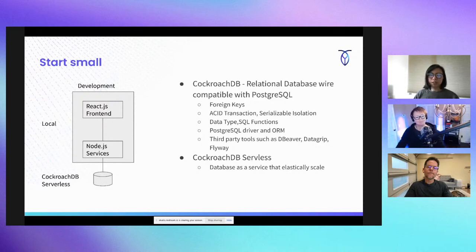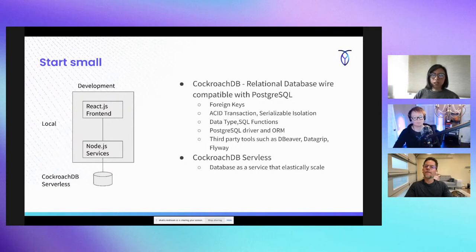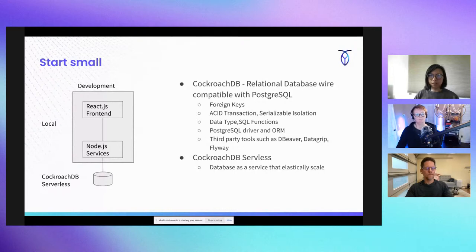CockroachDB, to any developer, looks just like a relational database you might be familiar with from school or online classes. It is wire-compatible with PostgreSQL, which means you have the toolboxes of a relational database — such as foreign keys, which ensure reference data integrity, cascading deletes and cascade updates, support for normal forms and data schemas.